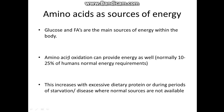In the body, generally glucose and fatty acids are the main sources of energy. However, amino acid oxidation provides energy as well. Normally about 10–25% of humans' energy requirements come from amino acids. This actually increases with excessive dietary protein — so if you eat a lot of protein — or during a period of starvation where you can't get your sugars and fatty acids. It's been shown in some carnivores it's up to 50%.